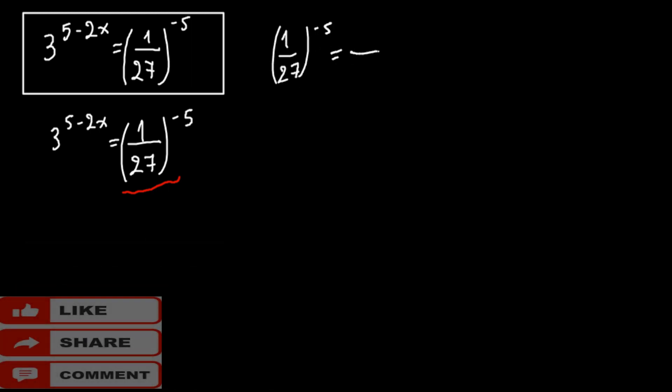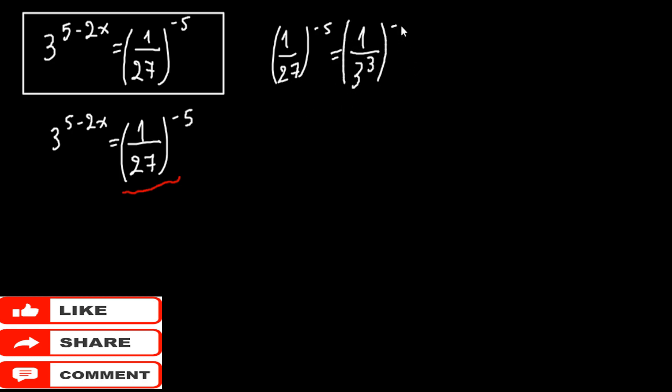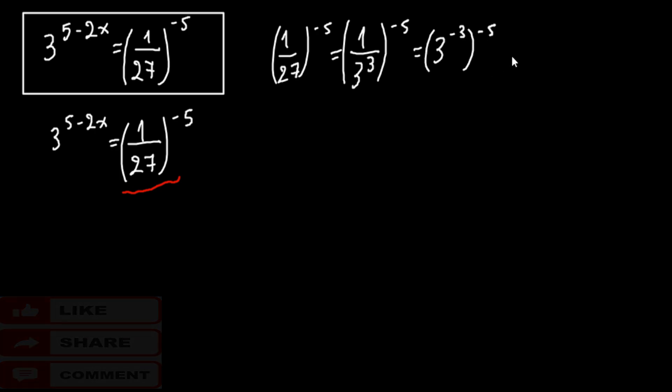This can be written as 1 over 3 to the third power, because 3 raised to 3 equals 27, and all of this raised to minus 5. The denominator can be written as 3 raised to minus 3, and all of this raised to minus 5.